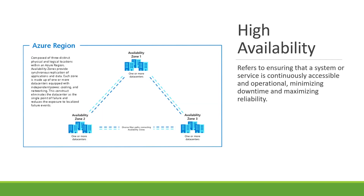High availability refers to the ability of a system or application to remain operational and accessible even in the face of component failures or disruptions. It involves redundancy, fault tolerance, and automated failover mechanisms.